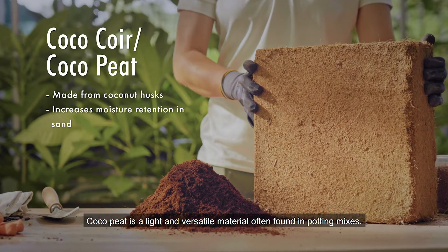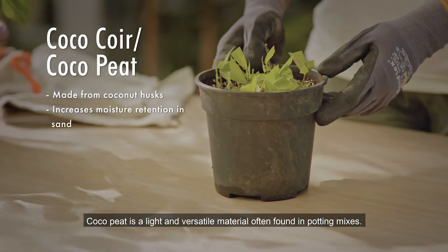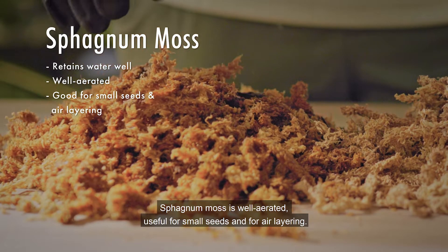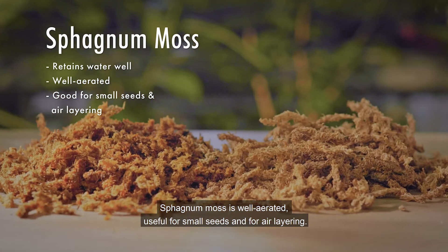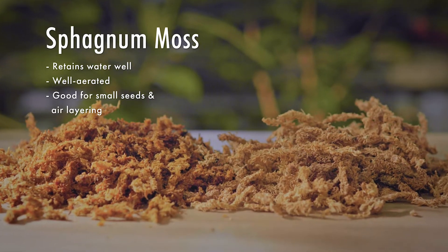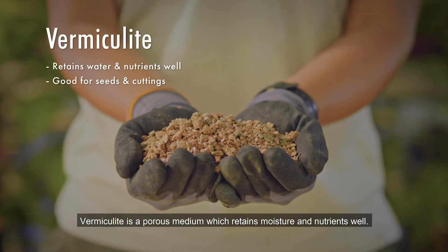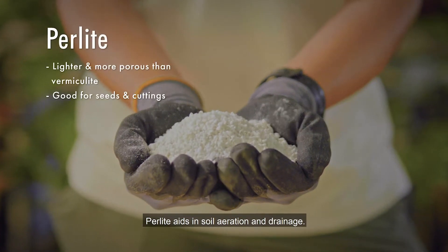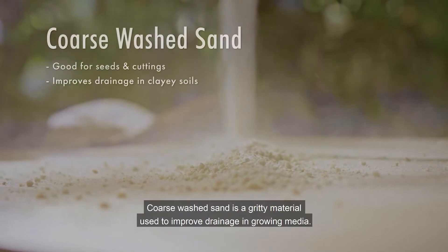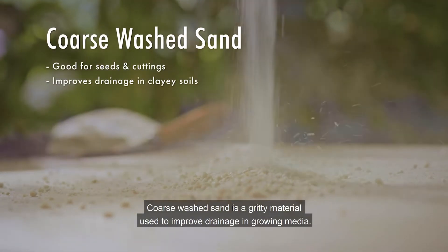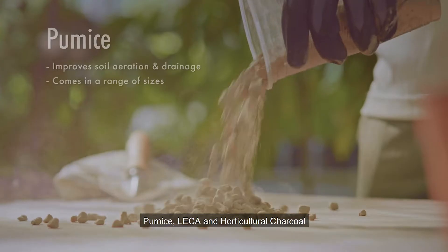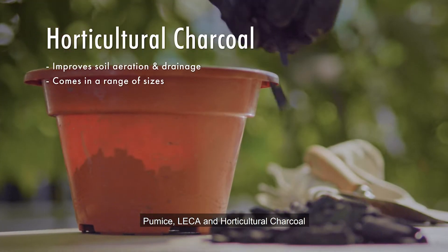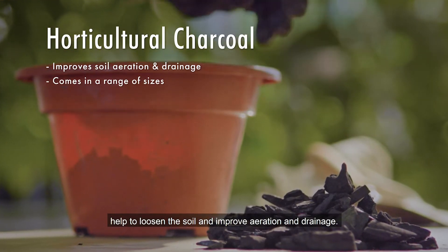Coco peat is a light and versatile material often found in potting mixes. Sphagnum moss is well aerated, useful for small seeds and for air layering. Vermiculite is a porous medium which retains moisture and nutrients well. Perlite aids in soil aeration and drainage. Coarse washed sand is a gritty material used to improve drainage in growing media. Pumice, lava rock and horticultural charcoal help to loosen the soil and improve aeration and drainage.